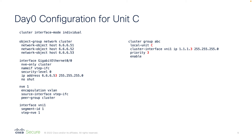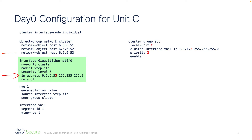Now let's understand the configuration needed on ASAv unit C to be part of the cluster. First, we need to set up the cluster interface mode as individual. If we try to set this up as span, an error will be shown in the CLI. After that, we need to create an object group which has the IP addresses of the VTEP interfaces, which will have the respective IP of the unit that we are adding into the cluster.